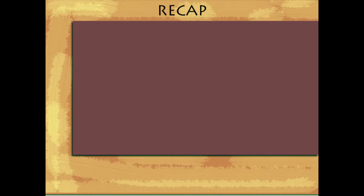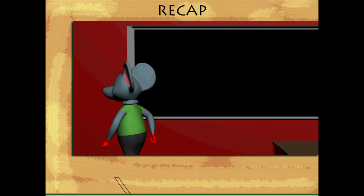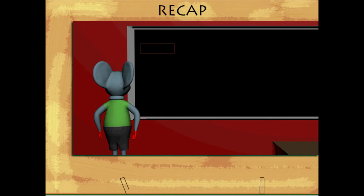Recap: Toby Mouse is ready to revise fractions. He watches the drawings on the board. One out of four parts is shaded, so he writes the fraction as one by four.